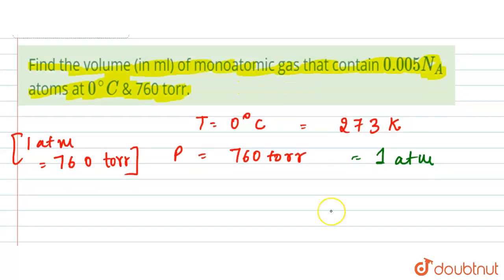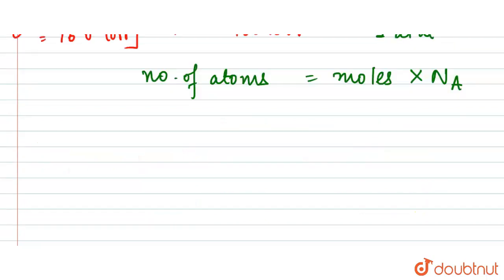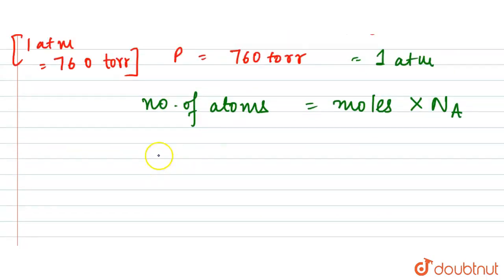So here when we find the number of moles, here we have the atoms. So here when we have the number of atoms, that is equal to the moles into the Avogadro's number.